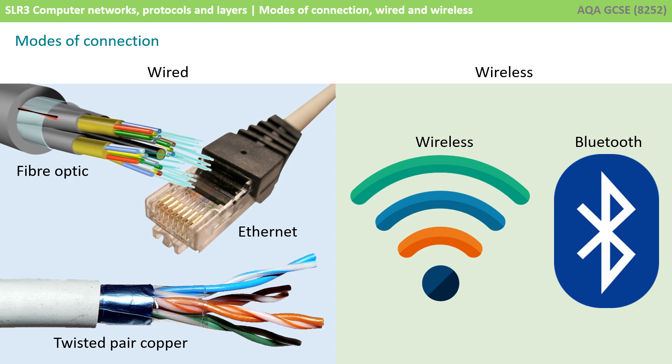Ethernet is not actually a type of wire, but is a type of protocol commonly used on copper twisted pair cables. If you look at the back of your router, you'll probably notice a connection just like the one shown here. Wired connections tend to be much quicker and much more reliable than wireless connections, which is still why they're quite dominant. Of course, the downside is you physically have to have a piece of wire.